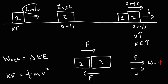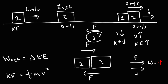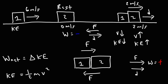Block 1's speed decreased from 6 to 2 meters per second, so its velocity went down, meaning it lost kinetic energy. The reason it lost kinetic energy is because block 2 is doing negative work on block 1. The force that block 2 exerts on block 1 is in the opposite direction to block 1's motion. Block 1 is moving to the right, so its displacement vector is to the right; however, the force that block 2 exerts on block 1 is to the left. Because the force and displacement vectors are opposite, negative work is being done on block 1, and its kinetic energy decreases.